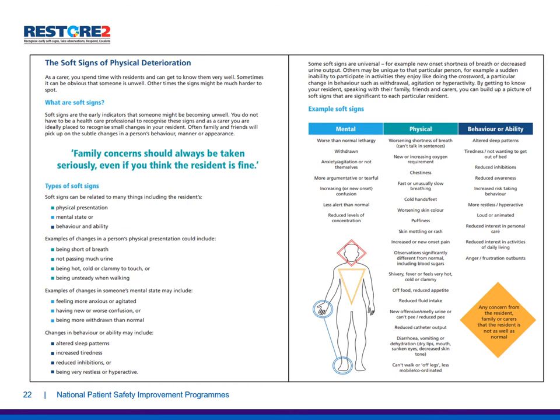Some soft signs are universal — for example, new onset shortness of breath or decreased urine output — and others may be unique to that person, such as a sudden inability to participate in activities they enjoy, like doing the crossword, or a particular change in behaviour such as withdrawal, agitation or hyperactivity. By getting to know your resident, speaking with their family, friends and carers, you can build up a picture of soft signs that are significant to each particular resident. Some of these are broken down in the Restore2 tool under the categories of mental, physical or behavioural/ability. What's most important is that you look out for them and notice them when they arise.